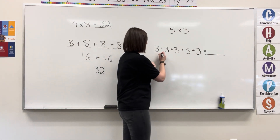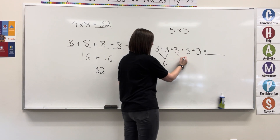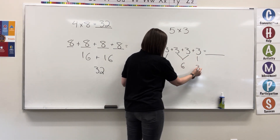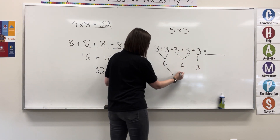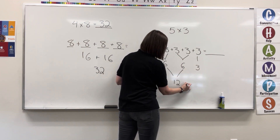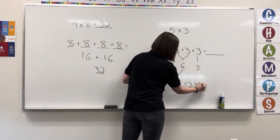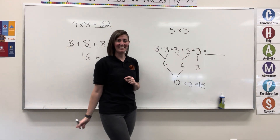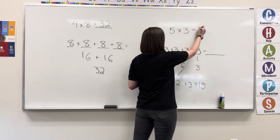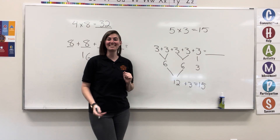3 plus 3 is 6, and 3 plus 3 is 6. 6 plus 6 is 12. 12 plus 3 is 15. So, we know that 5 times 3 is 15.